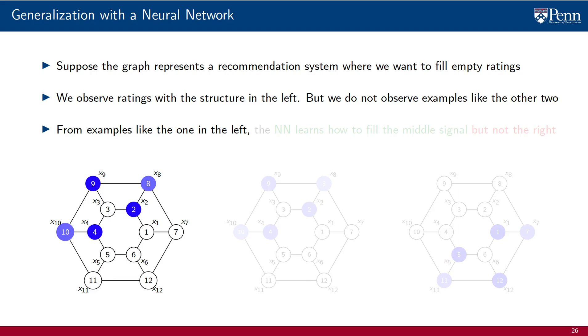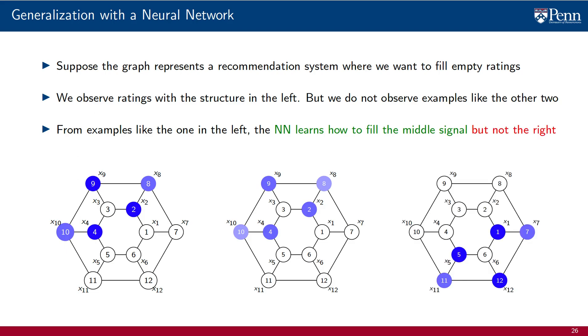From the examples like the one on the left, the neural network should be able to infer how to fill the ratings for the signal in the middle. But it is unreasonable that it will learn how to fill the signal on the right. There is nothing in this right signal, save for the graph, that can make it learnable from the signal on the left.